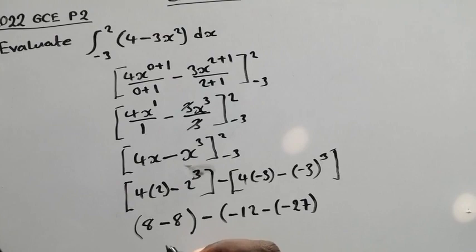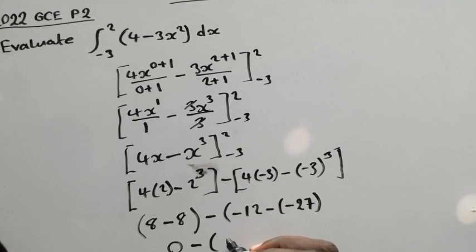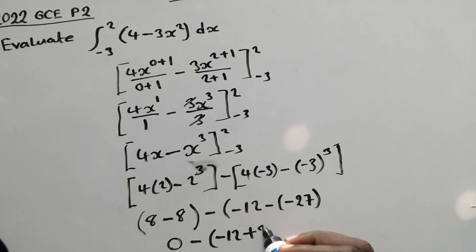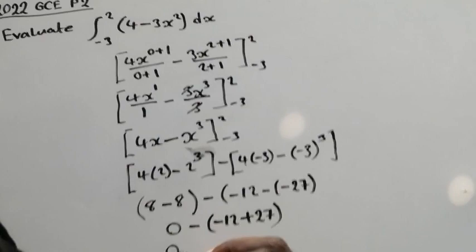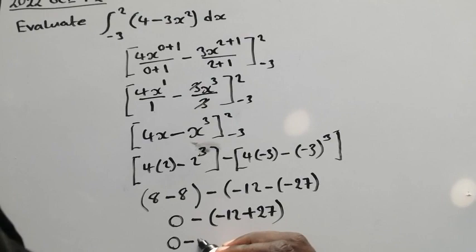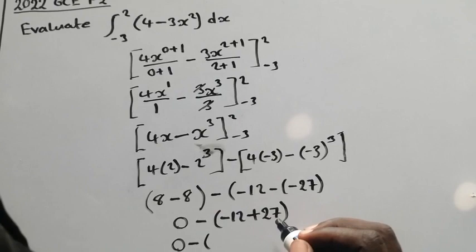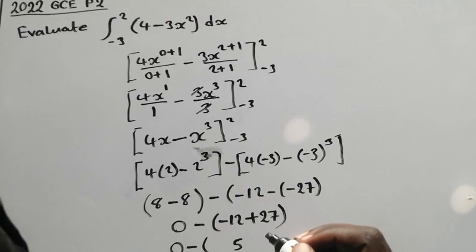So now 8 minus 8, we are going to have 0. Then negative 12, negative times negative is positive 27. So 0, negative 12 plus 27, which is going to be 15.